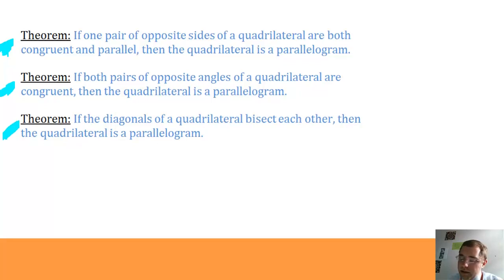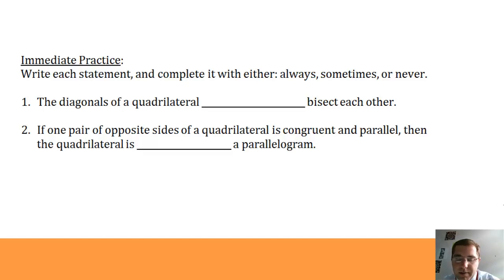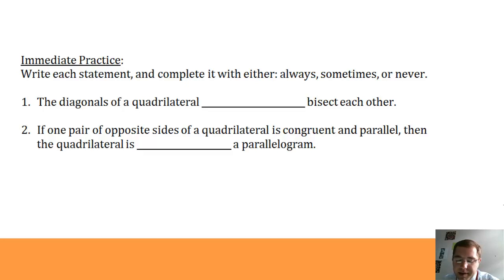Right now you just need to write them down and then use them for your two immediate practice problems. You need to write each statement and complete it with either always, sometimes, or never. Number one: the diagonals of a quadrilateral — always, sometimes, or never — bisect each other. And number two: if one pair of opposite sides of a quadrilateral is congruent and parallel, then the quadrilateral is — always, sometimes, or never — a parallelogram. Look at those theorems we just stated in this video to help you. And that is the end of section 5.2.